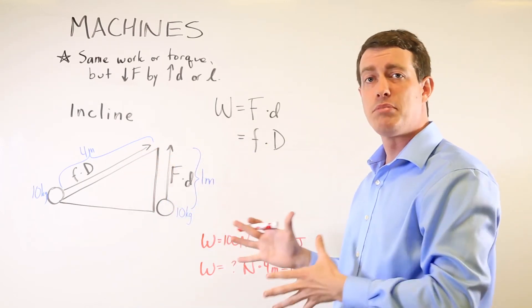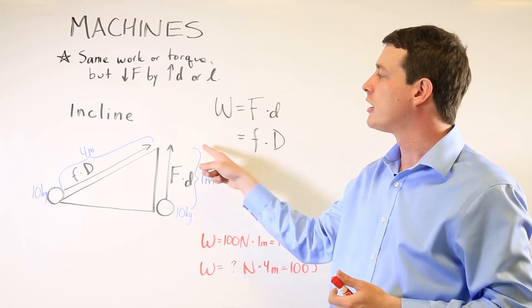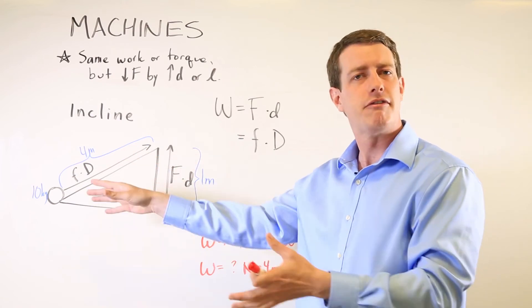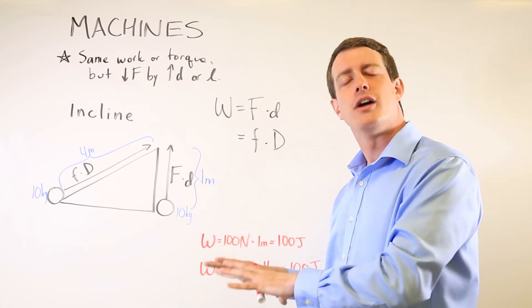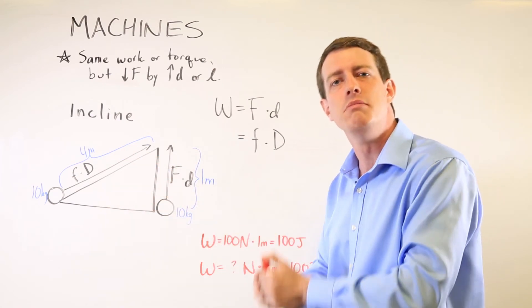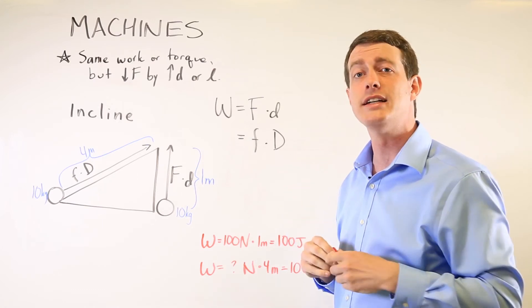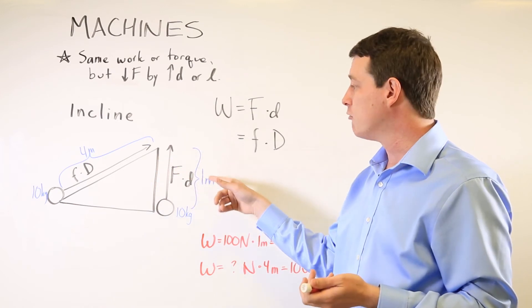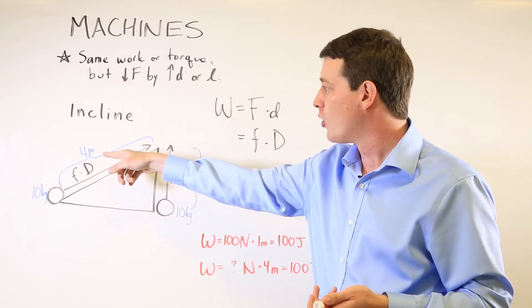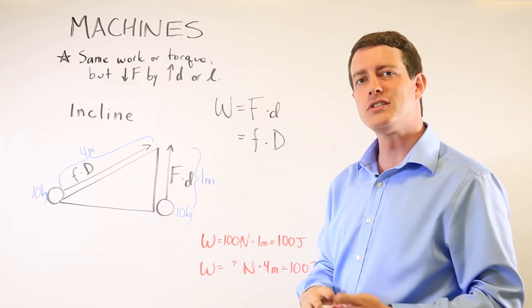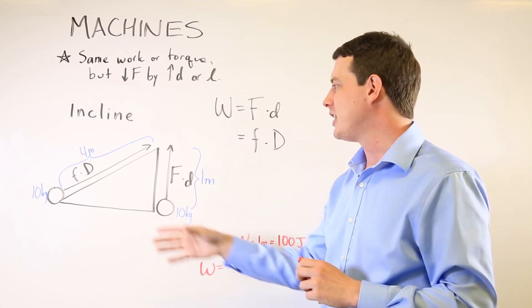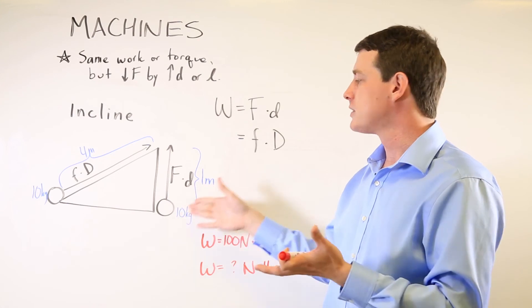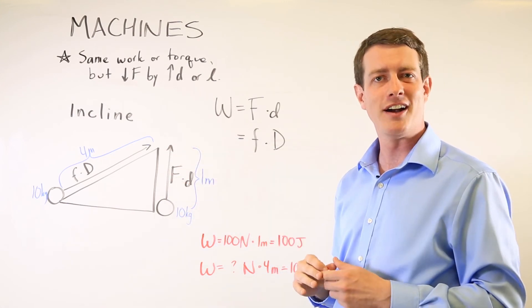Another example: if you don't know how long a ramp is but you're told you'll be using a quarter or a fifth of the brute force you'd need lifting the object directly, that can help you figure out the ratio of distances. The ratio of distances one to four is inversely proportional to the ratio of forces, which is 25 to 100 in this example — or for a heavier object, it would still be a four-to-one ratio.